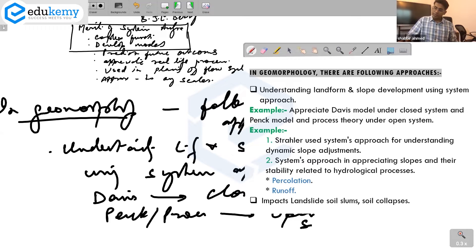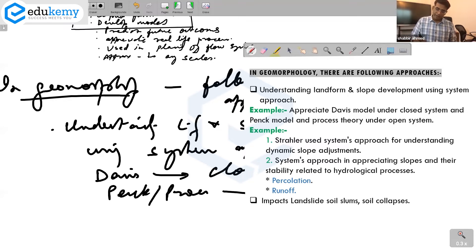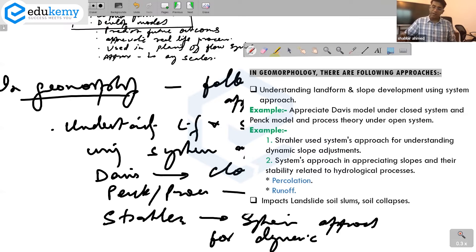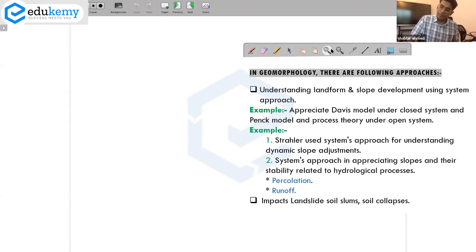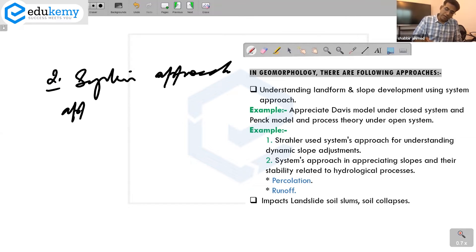Under open systems we have an example of Strahler. He has used systems approach for dynamic slope. So this is one with three examples.